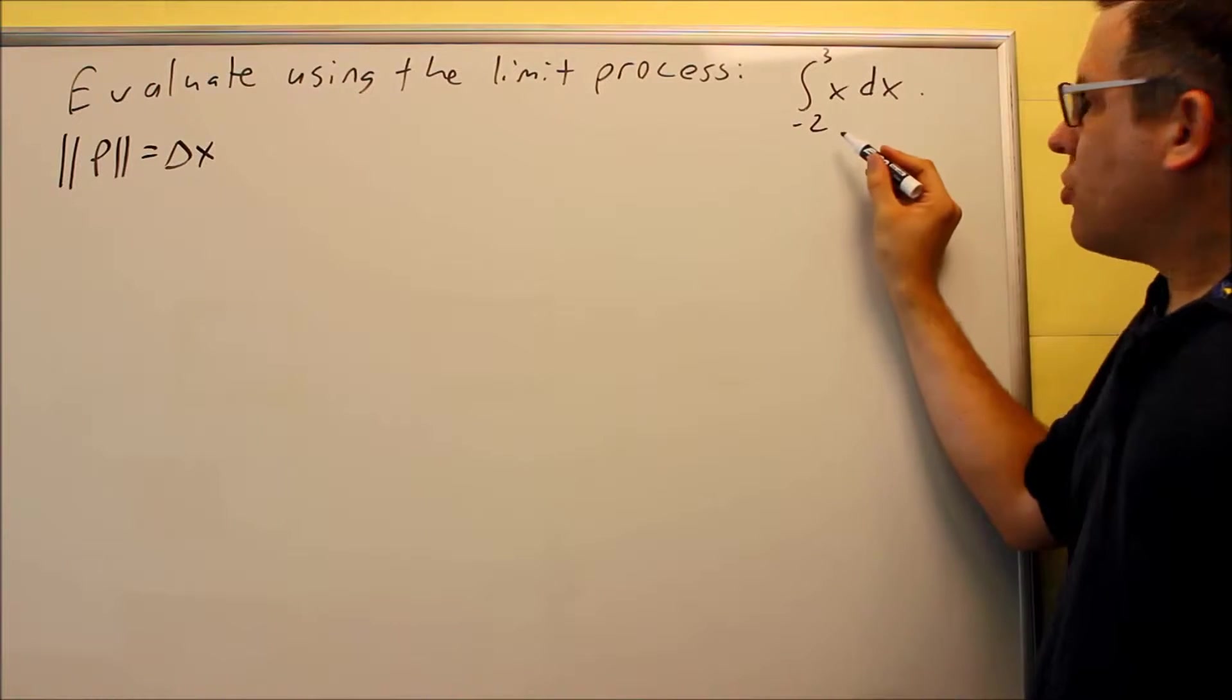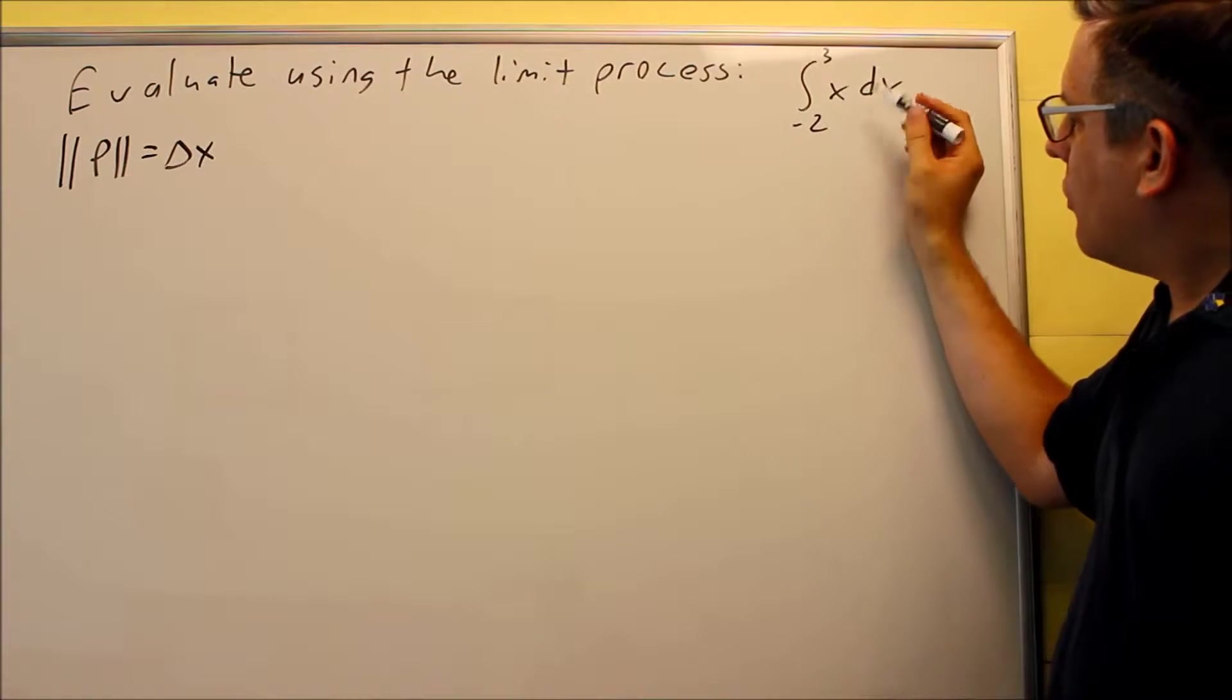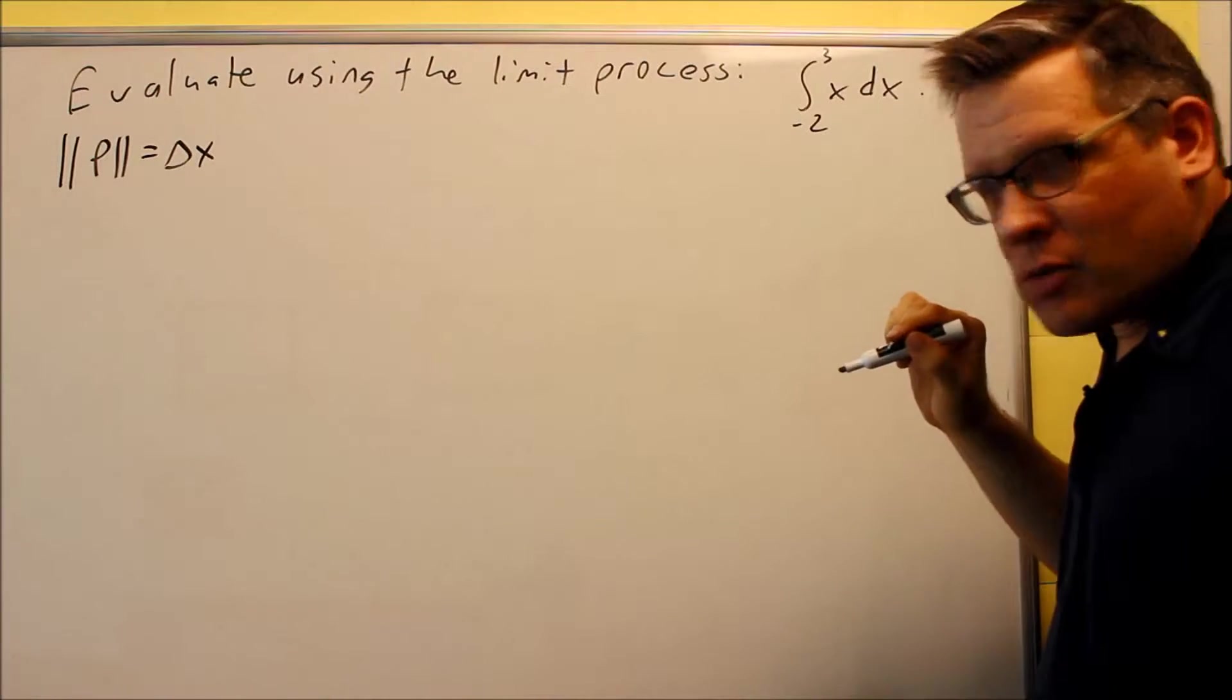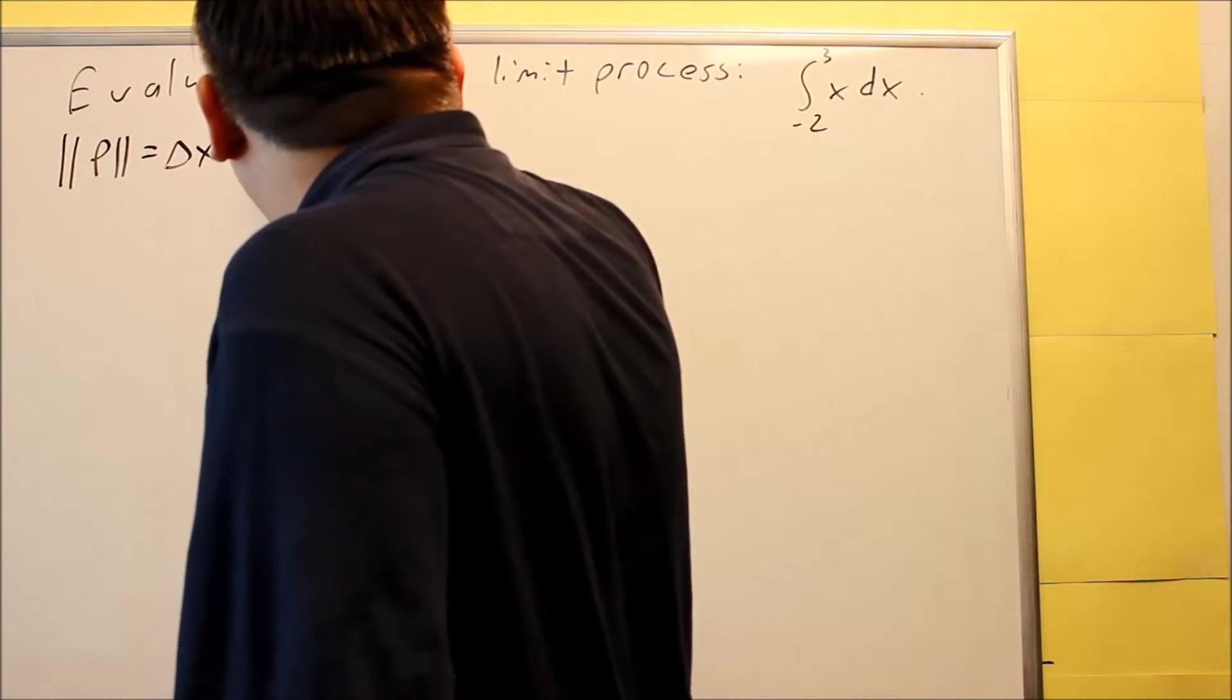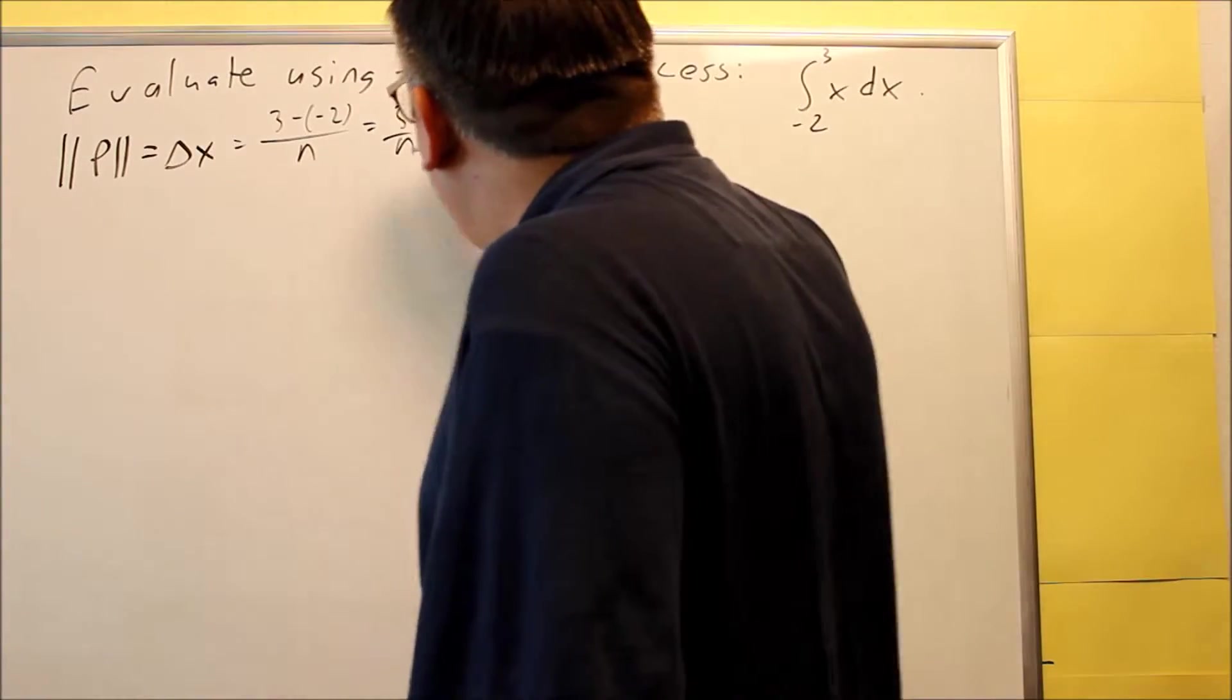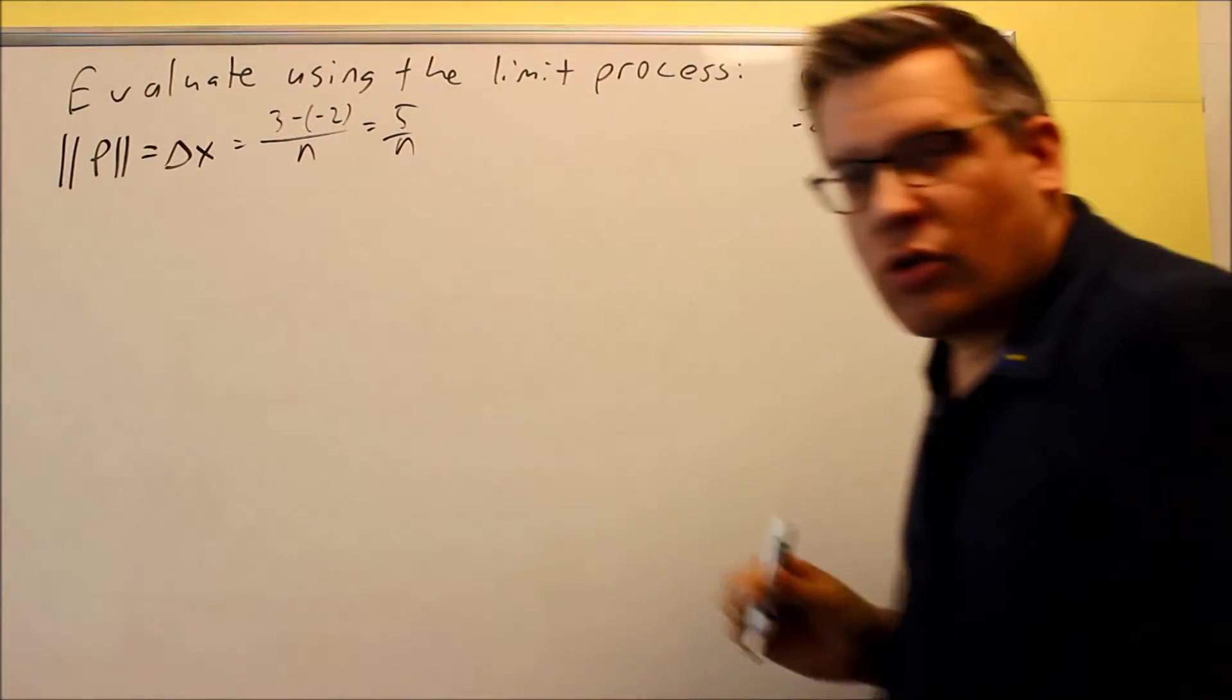Now, we can get the information directly from here. The b is basically, for this, the a is always the bottom number, and the b is the top number. So, we're going to do b minus a over n. So, we're going to do 3 minus negative 2 all over n, which means you get 5 over n as your delta x, and that's also the same thing as your norm.